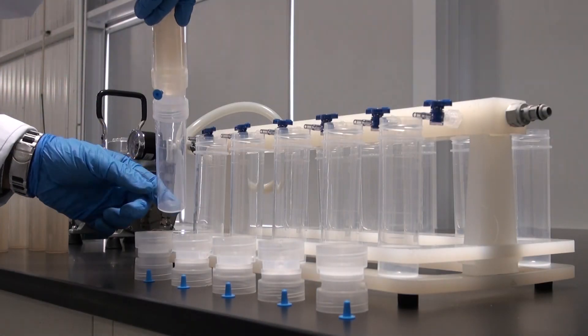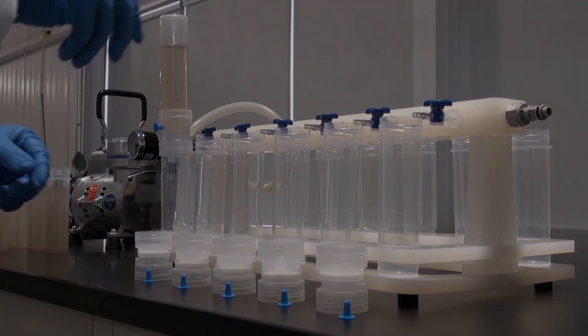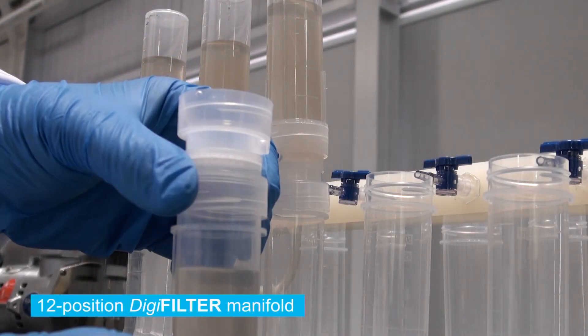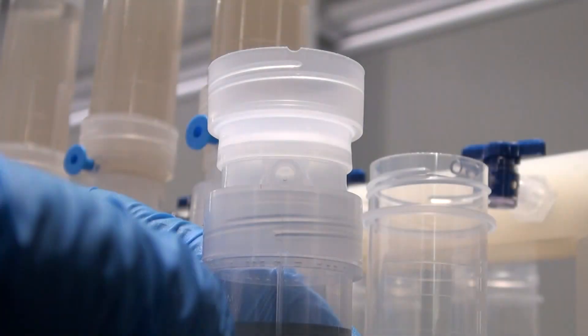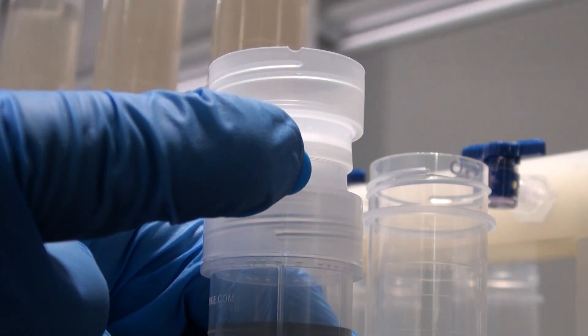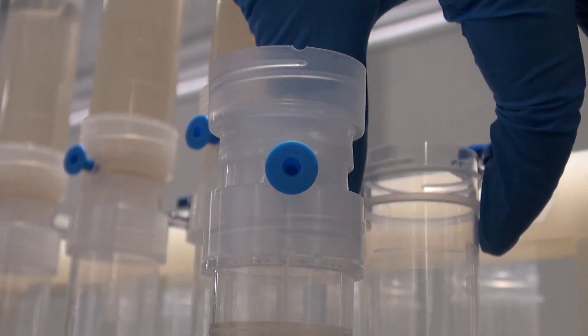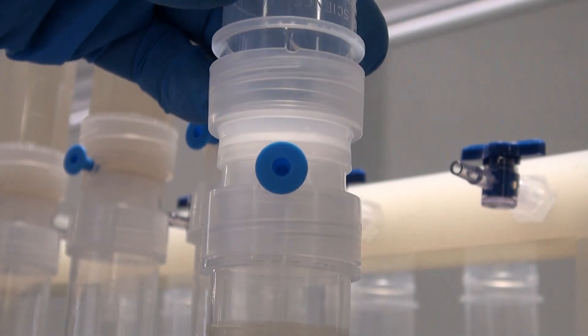Invert and connect the Digitube Digifilter assembly to the manifold, in this case a 12-position manifold. A 4-position manifold is also available, and they may be connected together in order to filter more samples simultaneously.